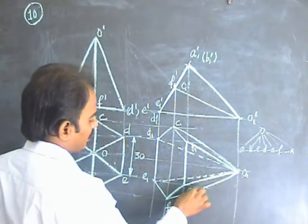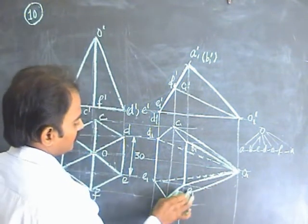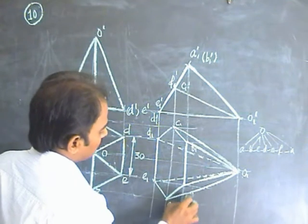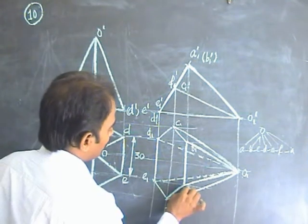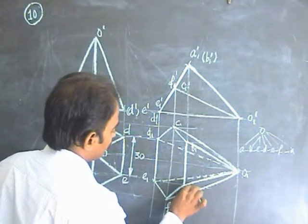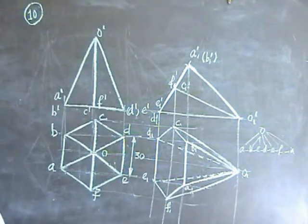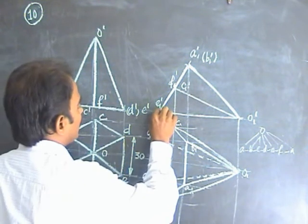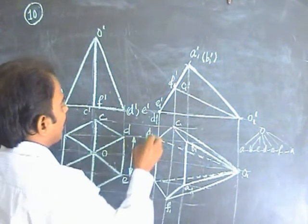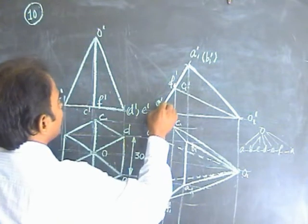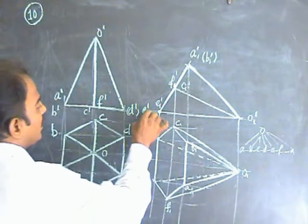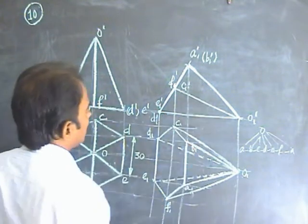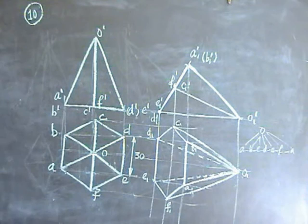So this is the final top view for the hexagonal pyramid resting on the ground on one of its triangular faces. Notice the three points on the triangle — O, D, E — are on the XY line, confirming that one of the triangular faces is on the HP.